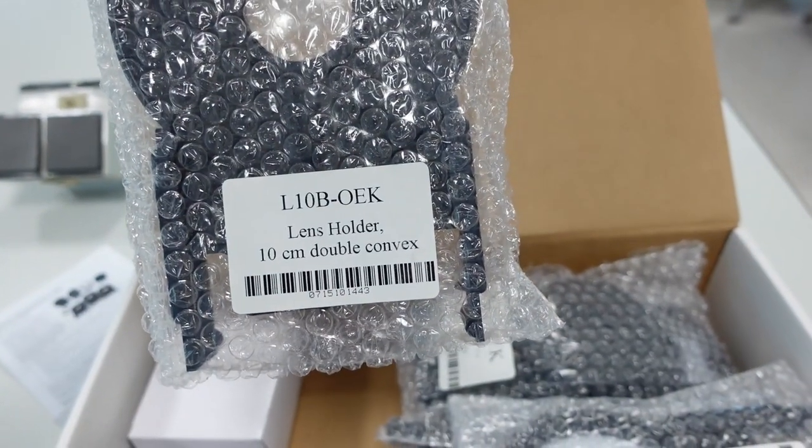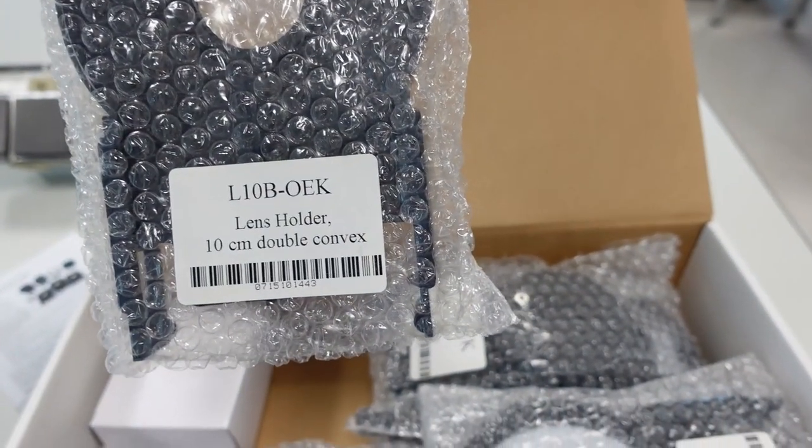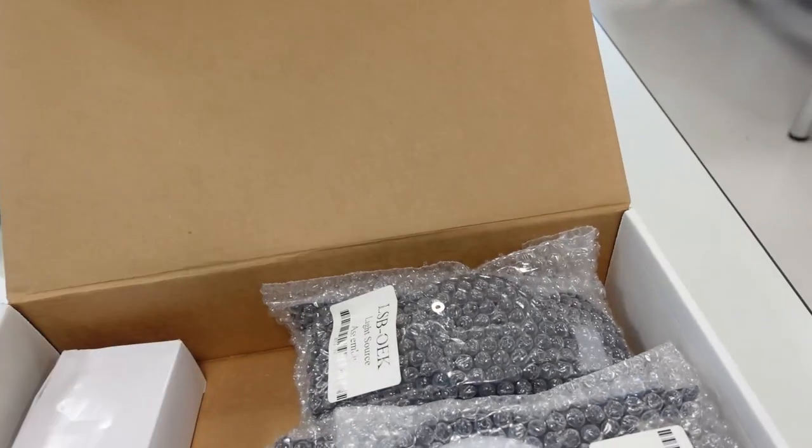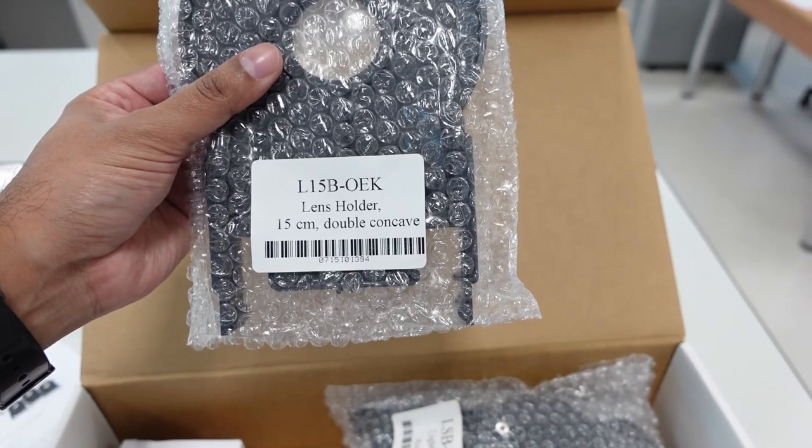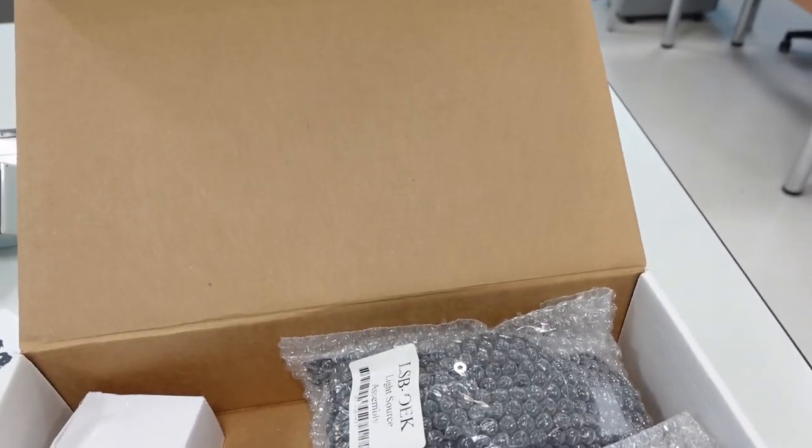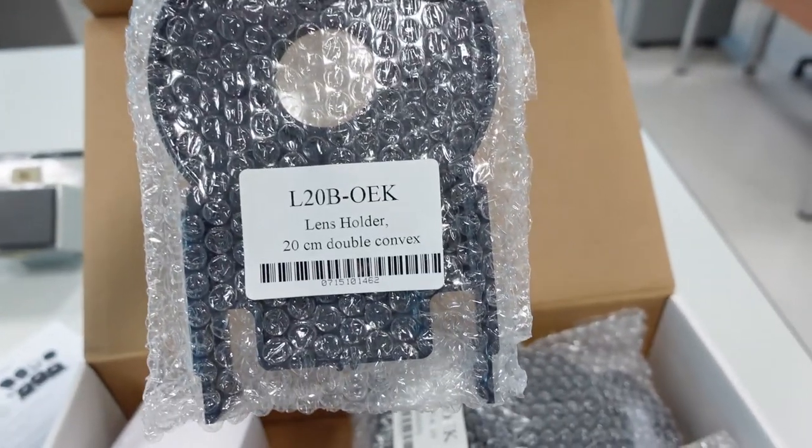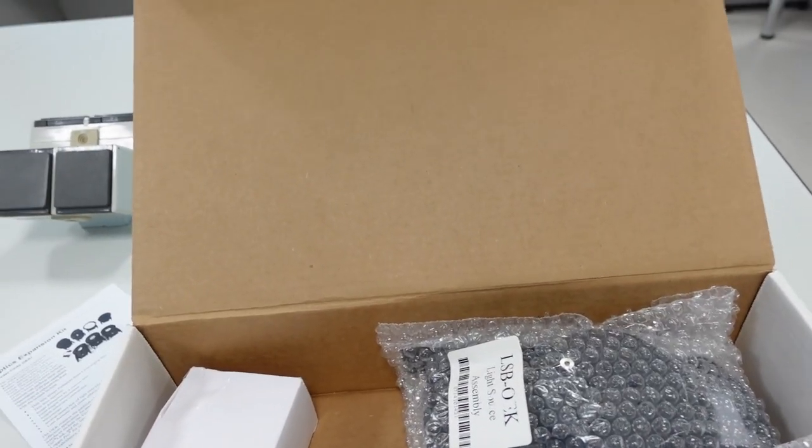You've got this lens holder, this double convex. That will come in useful. You've got a double concave lens, 15 cm. Okay, great. And you've got another double convex lens, 20 cm. So you've got three different lenses.